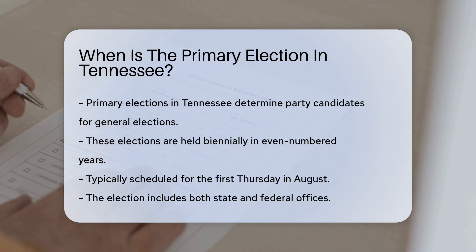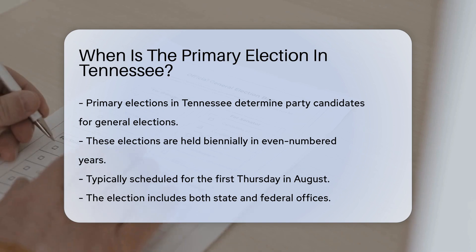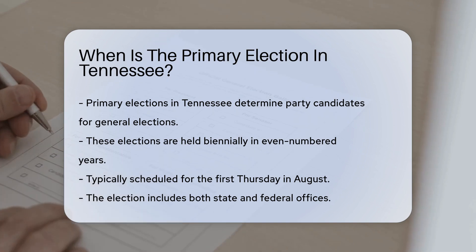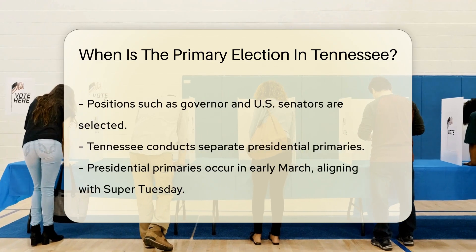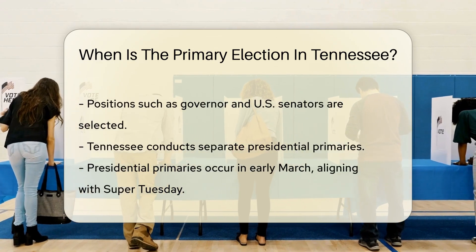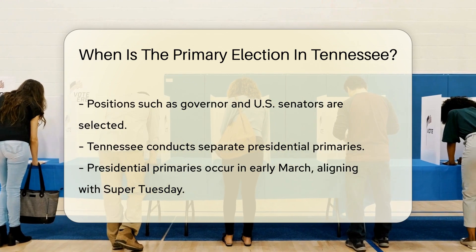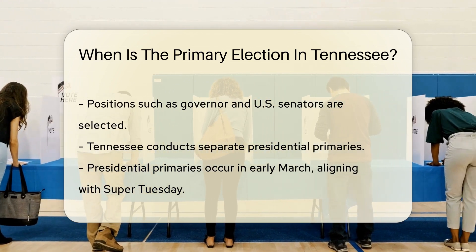The primary election includes both state and federal offices. Voters select candidates for positions such as governor and U.S. senators.